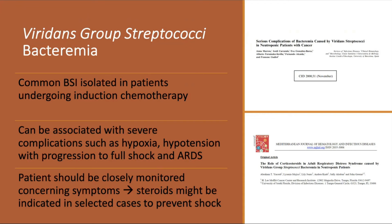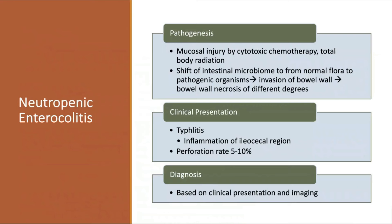Viridans group strep bacteremia patients must be assessed very carefully. A subset gets extremely sick and may need steroids to weaken the immune response to this particular bacteremia.